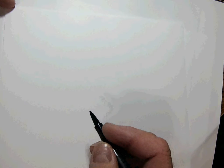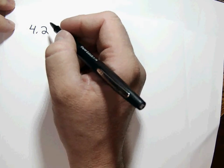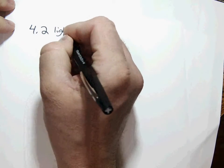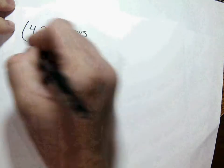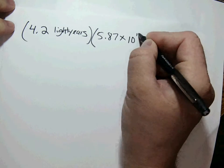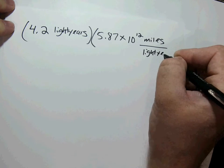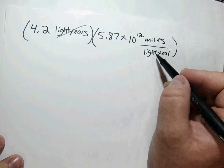We're talking about a nearby star — 4.2 light years away is pretty nearby, though you'll see it's nowhere close to anything we can get to in our lifetime. We need to go 4.2 light years, and the conversion is 5.87 times 10 to the 12 miles per light year. So we take 4.2 light years times 5.87 times 10 to the 12 miles per light year — light years cancel.